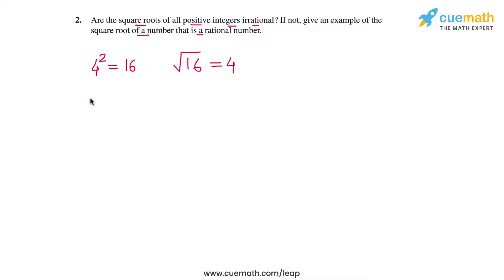Similarly, the square root of 25, the square root of 36, the square root of 49, the square root of 64, and any other integers that are perfect squares - the square roots of all such integers are also integers. And hence the square roots are rational.